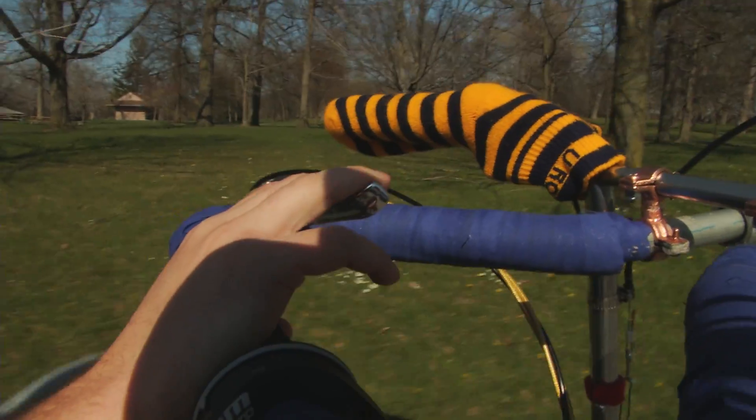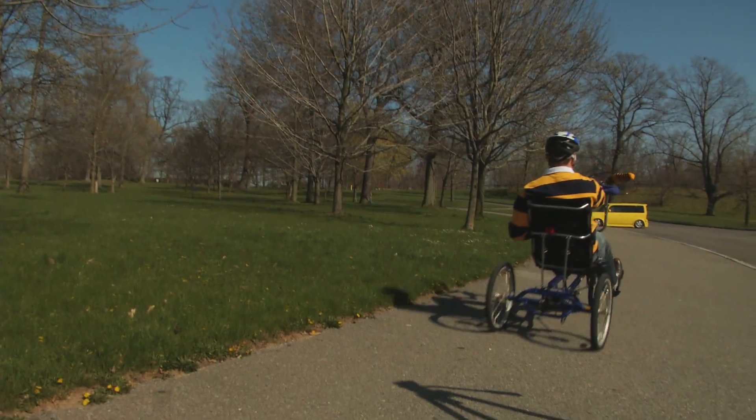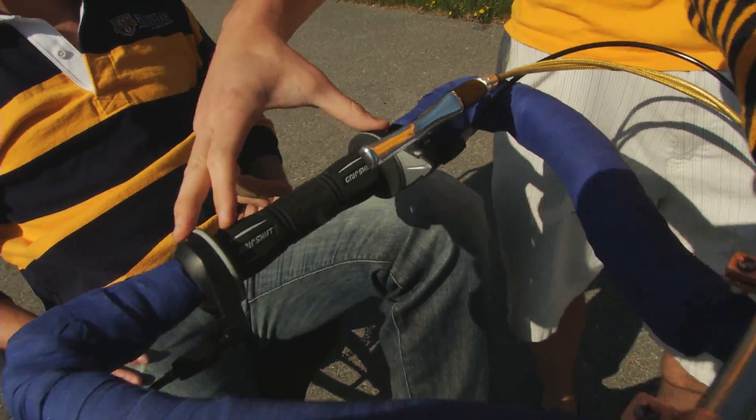We've designed a one-handed cycling control system for recumbent tricycle. Our device is very intuitive. Most of the controls mimic exactly how a standard bicycle is controlled.